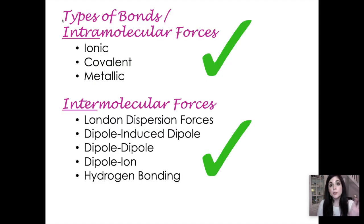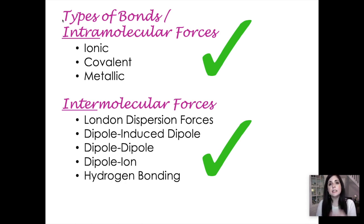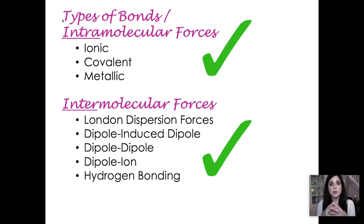We already talked about a few of these things. We talked about the types of bonds, and those are called intramolecular forces. That word intra means the bonds that hold molecules together — the bonds within one molecule. And there are ionic bonds, there are covalent bonds, and there are also metallic bonds.